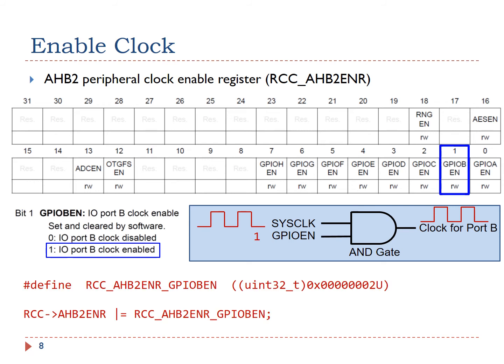Software can set GPIO B enable bit to 1 by using bitwise OR. In order to make the code more readable, we use this macro to define this constant. In fact, this macro has already been defined in the device header file.